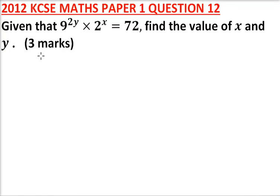2012, paper 1, question 12. We are told given that 9 to the power 2y multiplied by 2 to the power x is equal to 72, find the value of x and y.